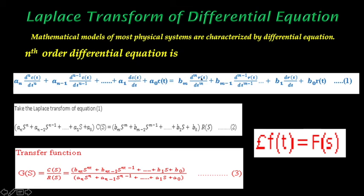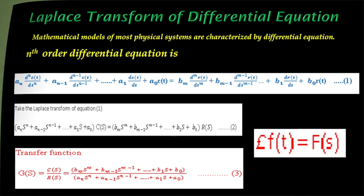For r(t) we write R(s), and R(s) is common. Then we get: b_m s^m plus b_(m-1) s^(m-1) plus b_1 s plus b_0. This is equation 2. So the transfer function is C(s) by R(s), and C(s)/R(s) equals this expression. This is the transfer function of the nth order differential equation.